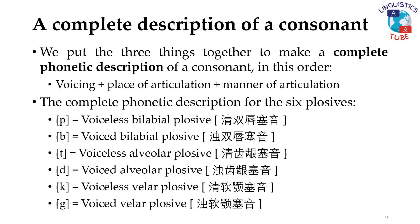To properly describe consonants, we need to put the three ways to describe them together. This gives us the complete phonetic description of a consonant. We first say its voicing, then its place of articulation, and finally its manner of articulation.